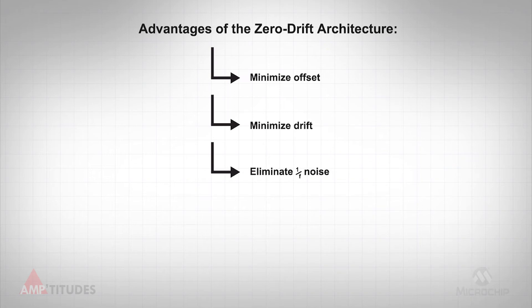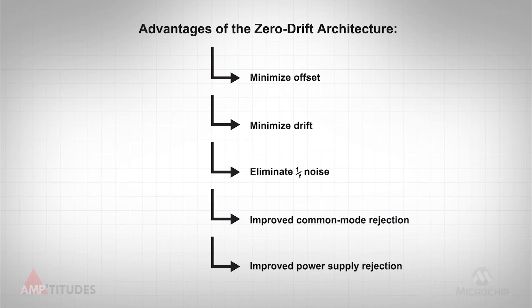The goal of zero drift amplifiers, regardless of the specific architecture employed, is to minimize offset, offset drift, and 1/f noise. In the process, other offset-related characteristics, such as common mode and power supply rejection, are also greatly improved.